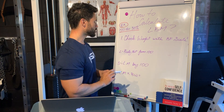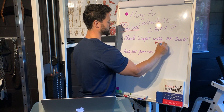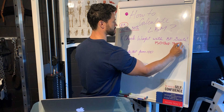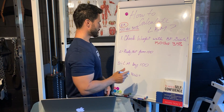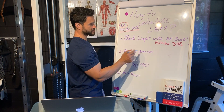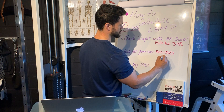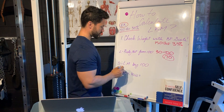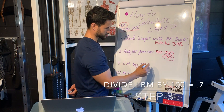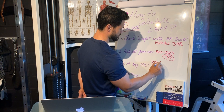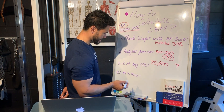Step one: check weight with a body fat scale. This client weighs 150 pounds and is 30% body fat based off the bioimpedance scale. Step two: subtract body fat from 100 — so 100 minus 30 gives us 70, meaning she's 70% lean body mass. Step three: divide lean mass by 100 — so 70 divided by 100 gives us 0.7.